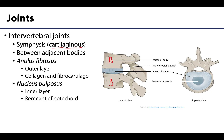Each intervertebral disc is composed of two layers: an outer annulus fibrosus, which functions to connect and protect the inner nucleus pulposus — a semi-fluid structure responsible for much of the flexibility of the discs and the vertebral column as a whole. The nucleus pulposus is actually a remnant of the notochord, the embryonic cartilaginous rod-like structure. It is the nucleus pulposus that may herniate through the annulus fibrosus, with implications for the nearby spinal cord and exiting nerves.